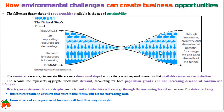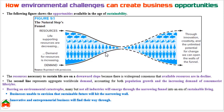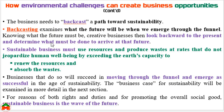Businesses that are unable to envision a sustainable future will not be able to pass through this narrow funnel. Businesses with innovative and entrepreneurial approaches can find a way through the tunnel, because there is huge demand for sustainable products and services. To pass through the narrow funnel, the business needs to backcast a path toward sustainability.